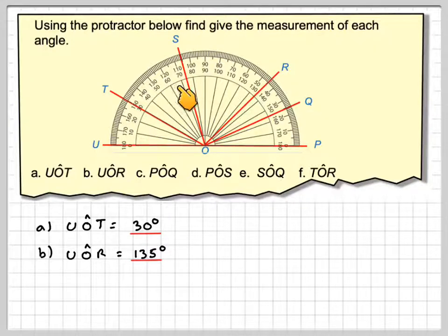But again, we're going to measure around on the inside of the protractor. POQ, so this time we're starting here. So POQ, we're starting from here. So this time we're going to measure on the outside of the protractor, so 0, 10, 25 degrees.